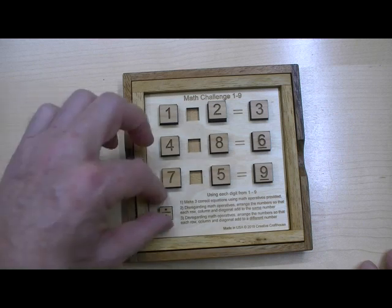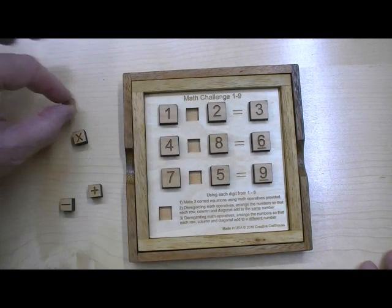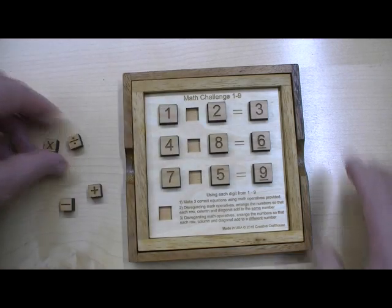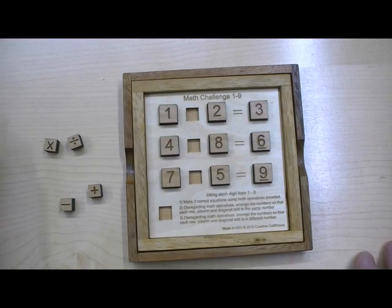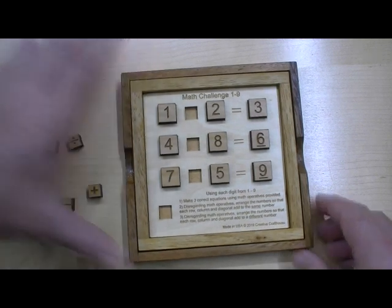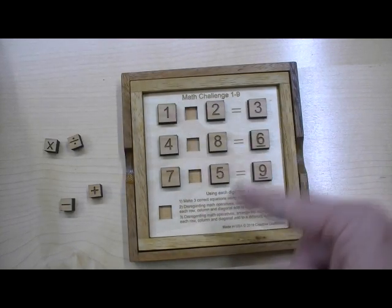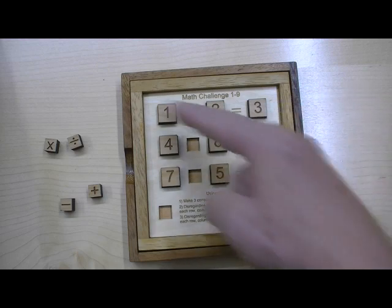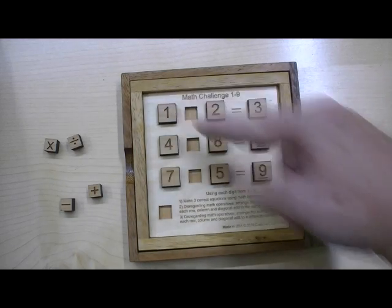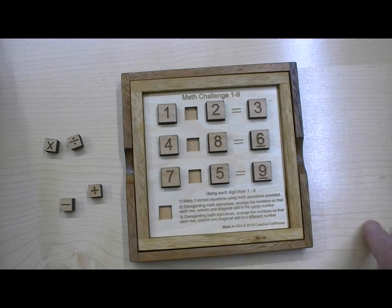The next challenge is to not—the next two challenges are to not consider the math operative signs. Just look at this as a grid of numbers. And the next one is a magic square. This is the one that's fairly well known. Arrange these numbers such that every row, column, and major diagonal adds to the same number.